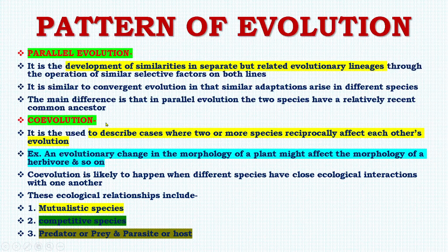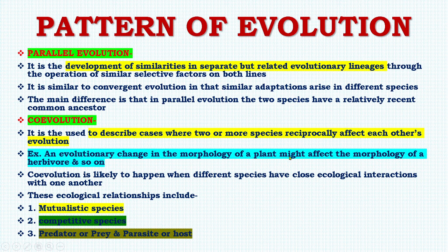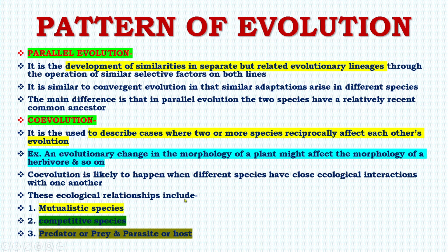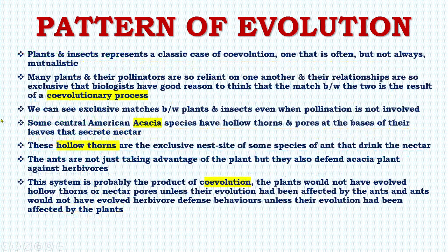Next is co-evolution. It is used to describe cases where two or more species reciprocally affect each other's evolution. For example, an evolutionary change in the morphology of a plant might affect the morphology of a herbivore and so on. Co-evolution is likely to happen when different species have close ecological interactions with one another. These ecological relationships include mutualistic species, competitive species, predator-prey, or parasite-host.